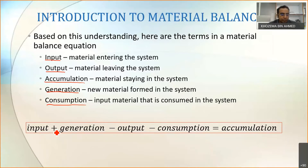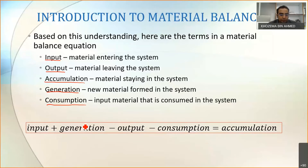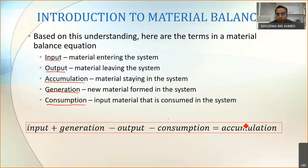The equation states that input plus generation minus output minus consumption equals accumulation. Meaning that whatever you put inside the system, plus whatever is generated, minus whatever is leaving the system, minus whatever is consumed in the system — whatever is left after all that addition and subtraction will be the amount accumulated in the system.